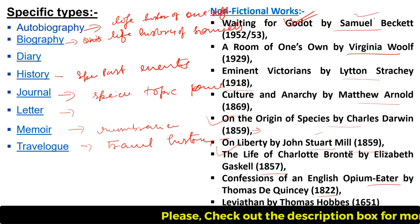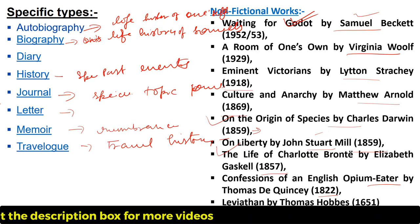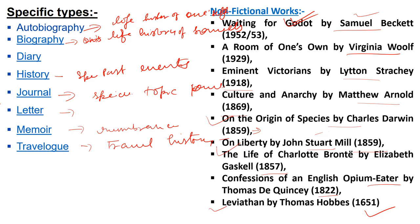So we have discussed what kinds of works are written in non-fictional categories: autobiography, biography, diary, history, journals, letters, memoir, and travel log — these all come under the category of non-fictional work. These are all genres of non-fiction, and literature written in these forms is counted in the non-fictional category. So friends, in today's video you have learned what non-fictional work is, what important works come under it, and what its genres are. Till then, keep watching and keep learning. Thanks a lot for watching.